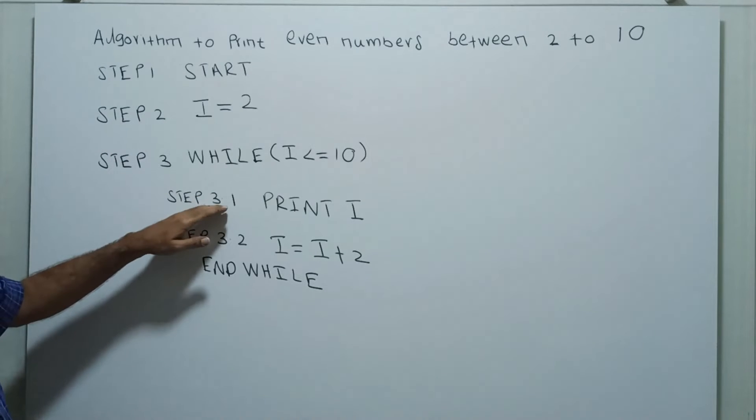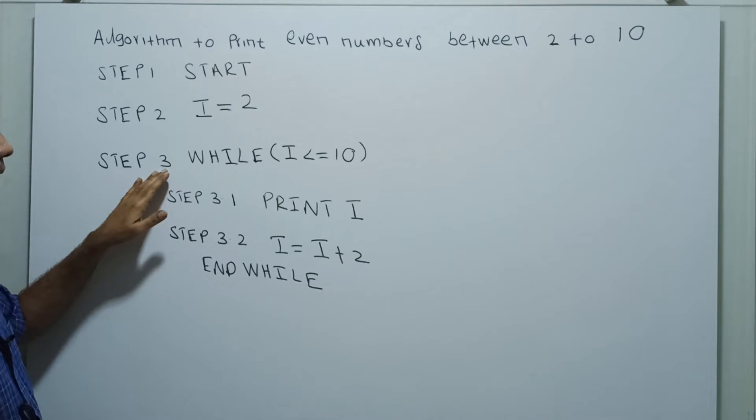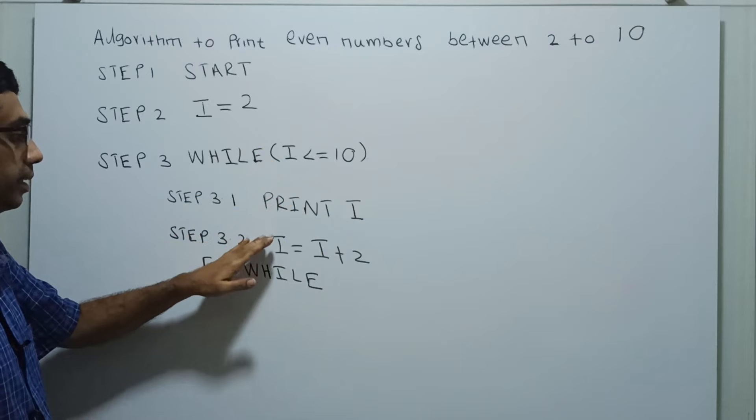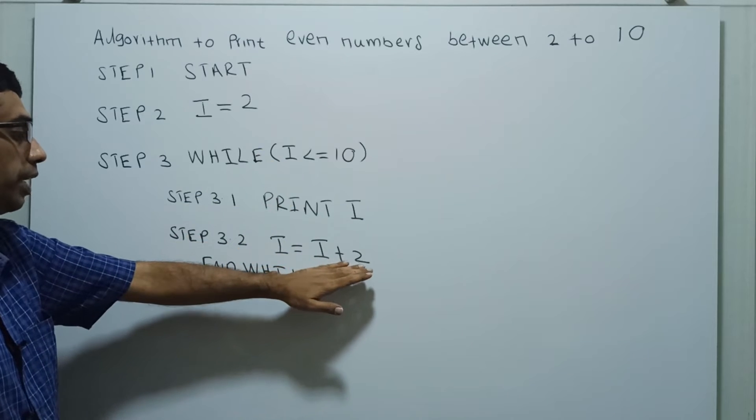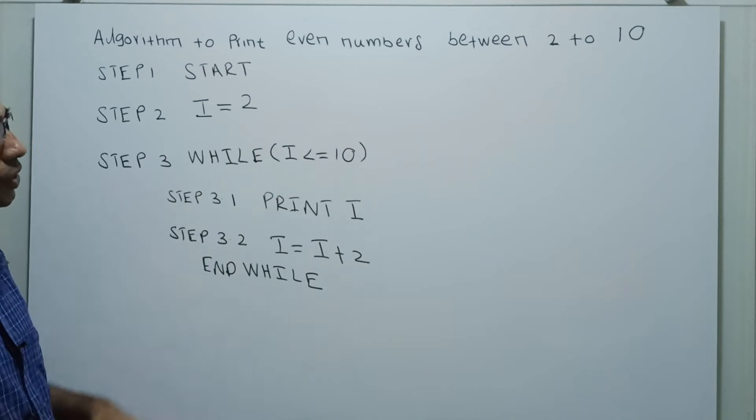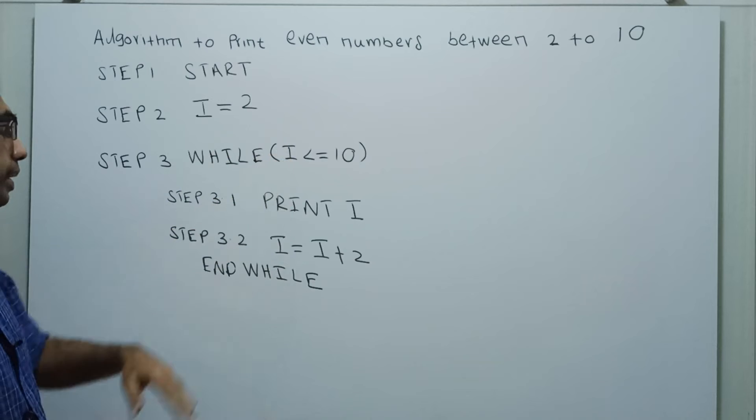So step 3.1 and 3.2 are the sub steps of step 3. While the condition is true, step 3.1 print I, then I will be incremented by 2. I equal to I plus 2 will get executed. Then the condition is checked again. The loop will go until I is less than or equal to 10.